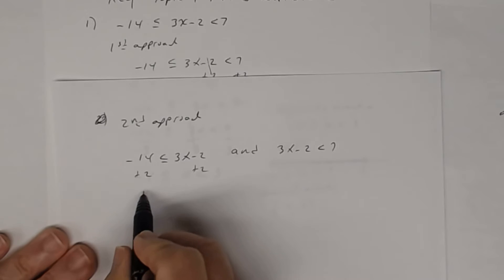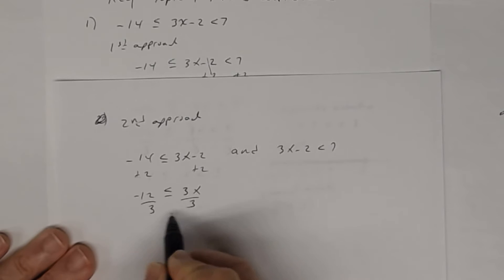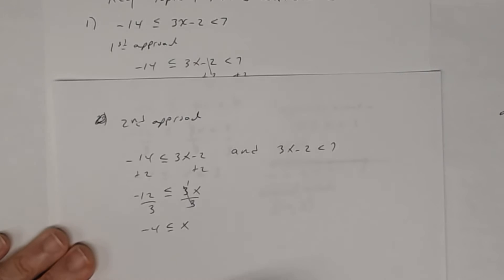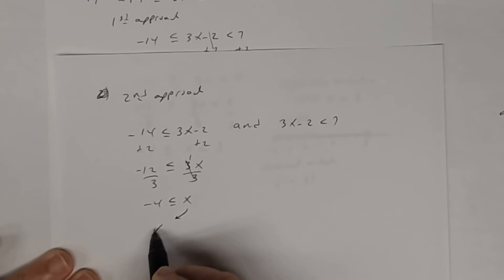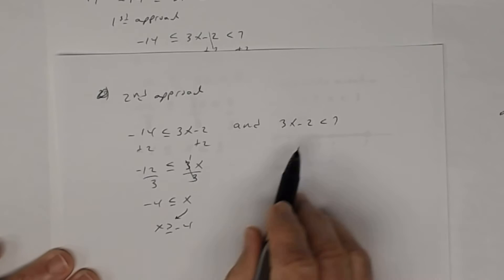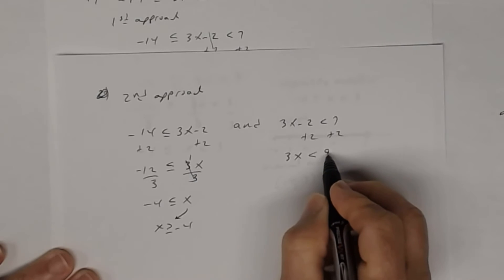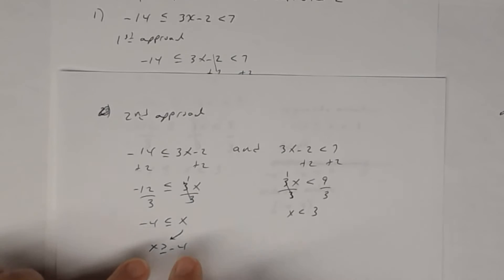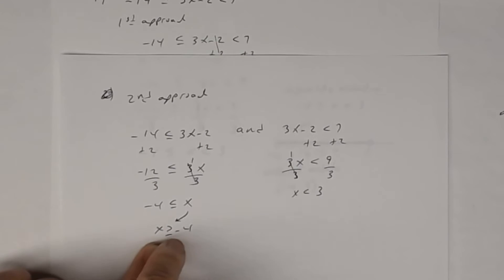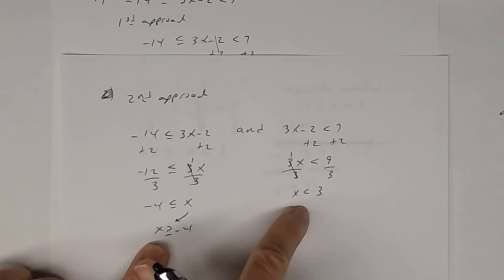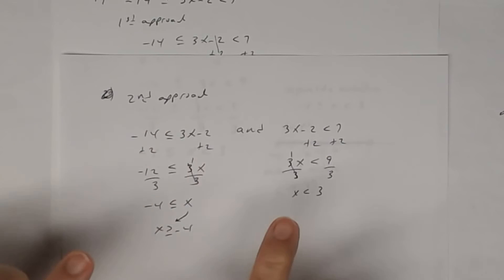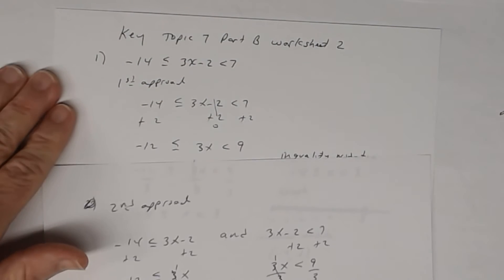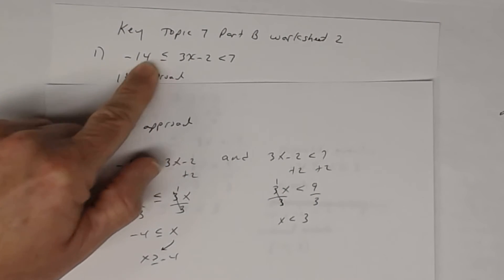You write two inequalities: negative 14 ≤ 3x − 2, and 3x − 2 < 7. Solving each individually — adding 2 to both sides of the first: negative 12 ≤ 3x. Dividing both sides by 3: negative 4 ≤ x, which means x ≥ −4. For the second: adding 2 gives 3x < 9; dividing by 3 gives x < 3. Keep in mind: x ≥ −4 is a solution to the first only, and x < 3 is a solution to the second only.